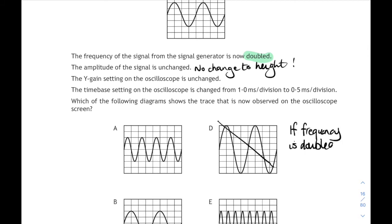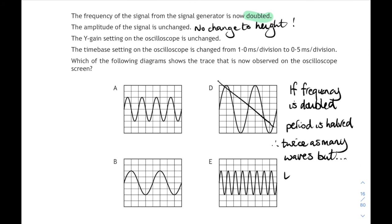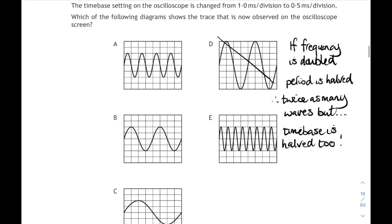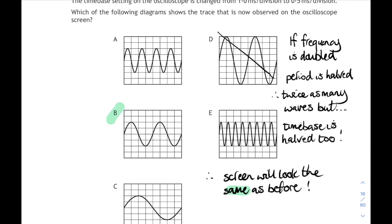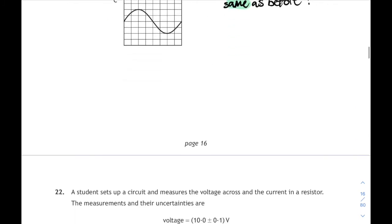But let's think about what's happened to the frequency. We're being told that the frequency has doubled and the time-based setting has changed from one millisecond per division to half a millisecond per division. Well, if the frequency has doubled, the period is halved. The time it takes for one wave will be halved. So you would see twice as many waves on the screen, but the time-based is halved. And because the time-based is halved, then the screen will look exactly the same. So it will be answer B. That's pretty tricky.